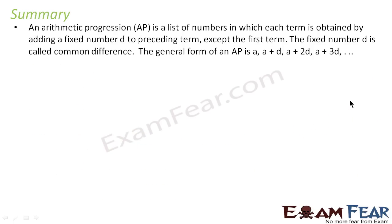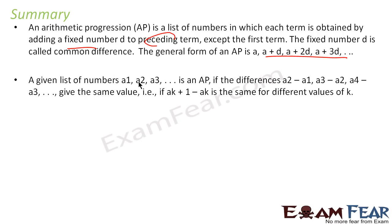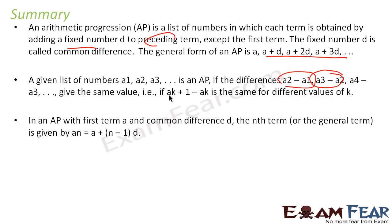Let's do a quick recap summary. Arithmetic progression is a list of numbers where each term is obtained by adding a fixed number to the preceding term. So the sequence is a, a+d, a+2d, a+3d form. Also, a given list of numbers a1, a2, a3 is an AP if the difference is constant: a2 - a1, a3 - a2. Everything is constant and the difference is the common difference.